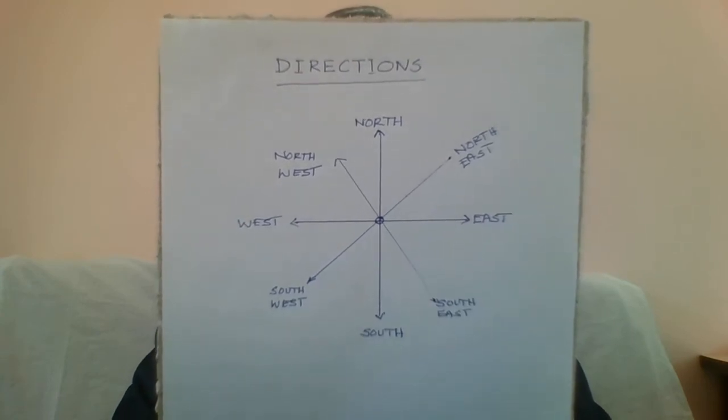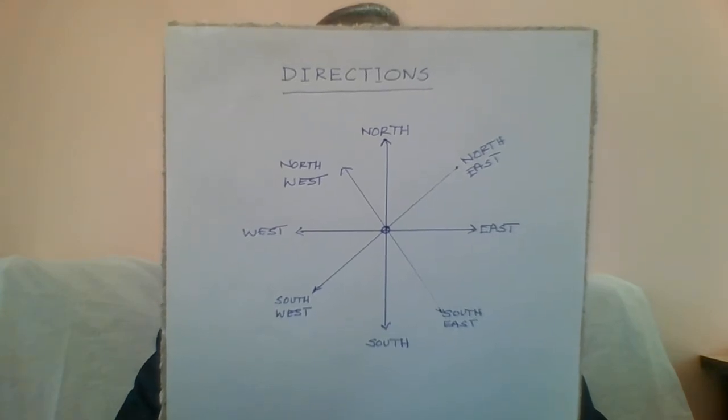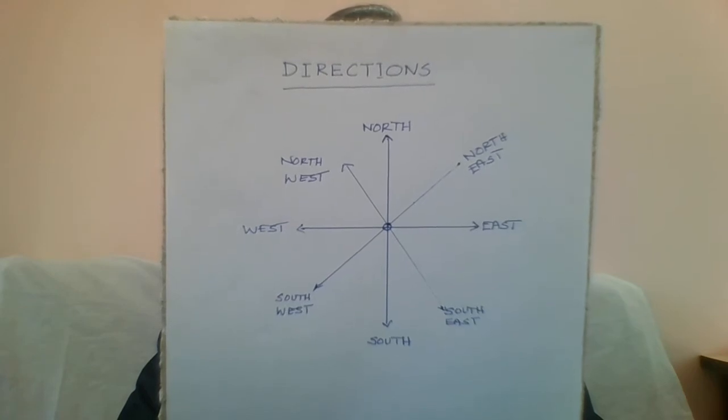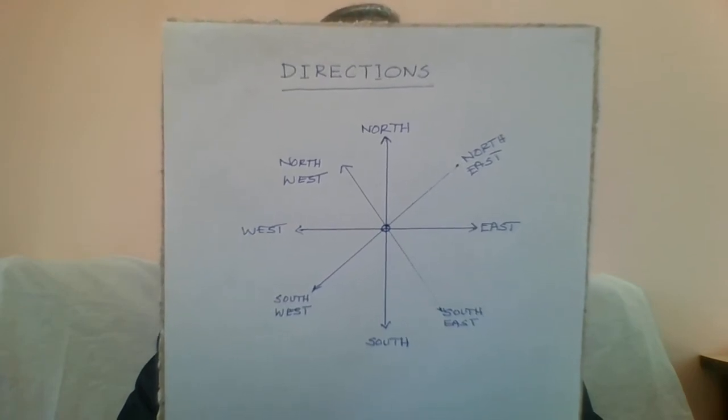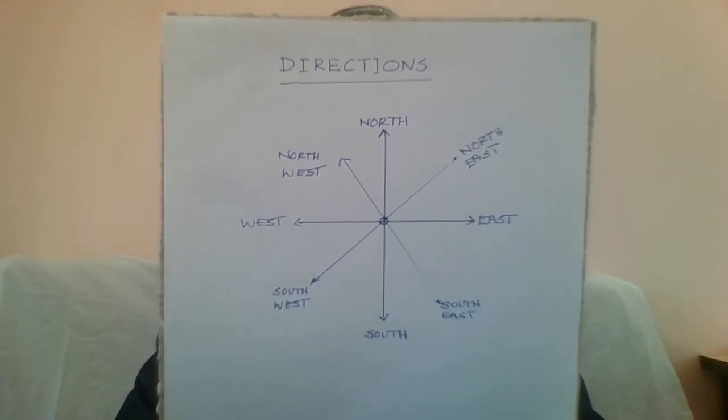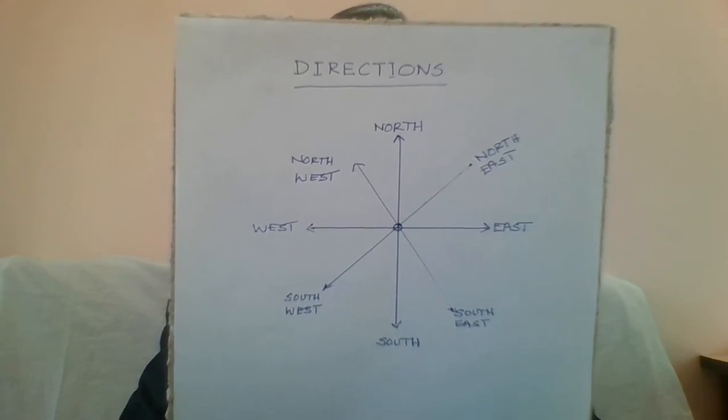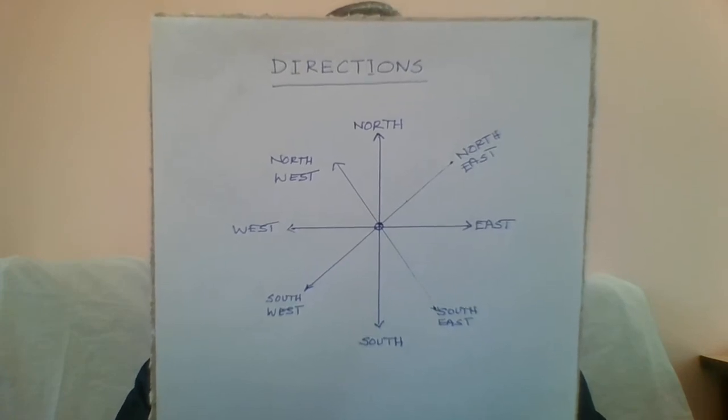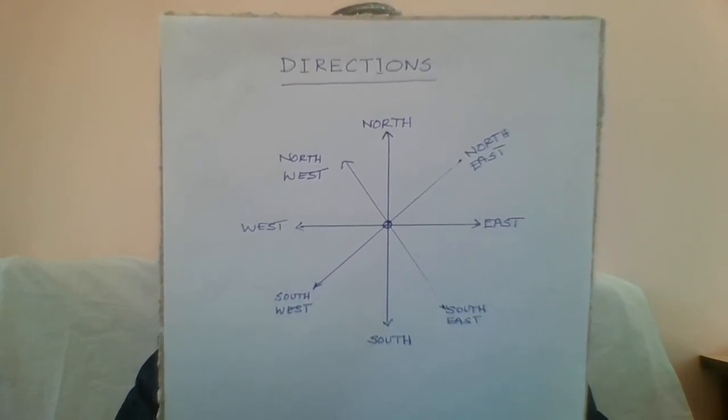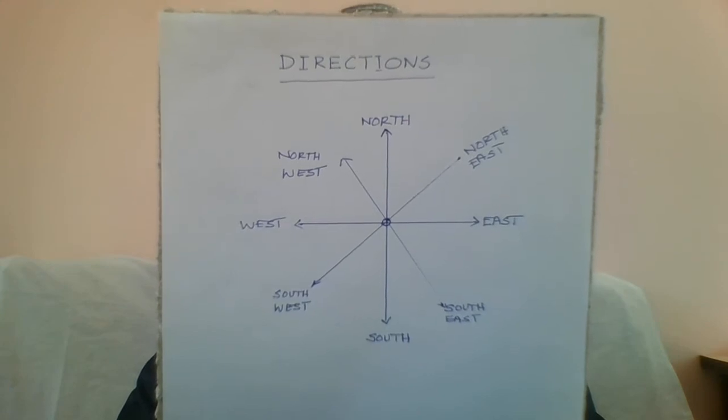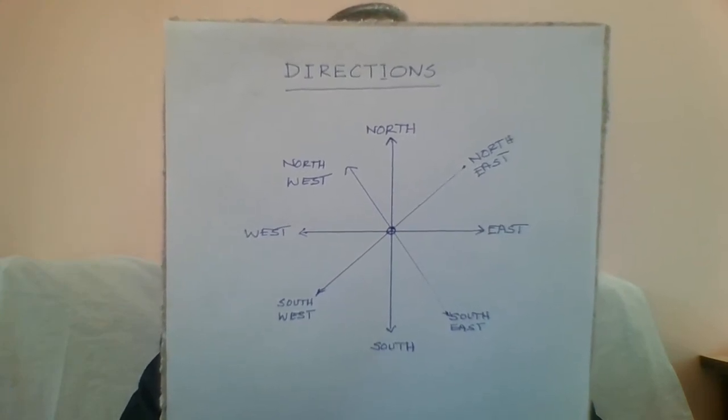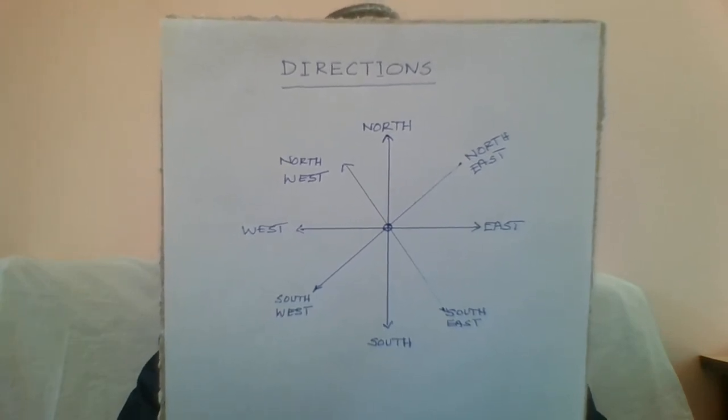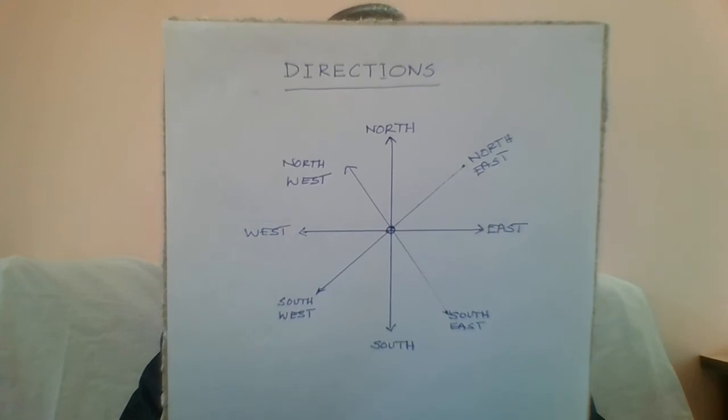Now the angle between any two consecutive primary directions is 90 degrees. That means the angle between North and East is 90 degrees. Similarly, the angle between South and West is 90 degrees. Likewise, the angle between any two consecutive secondary directions is 90 degrees. That means the angle between, let's say, North East and South East is 90 degrees. The angle between a secondary direction and the nearest primary direction is 45 degrees.